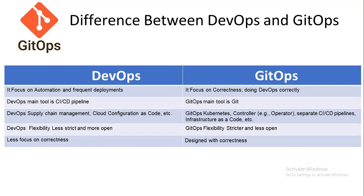In terms of flexibility, DevOps is less strict and more open, while GitOps is stricter and less open. DevOps has less focus on correctness, whereas GitOps is designed with correctness as a core principle. The most important difference is that DevOps' main tool is the CI/CD pipeline, while GitOps' main tool is Git — which is why basic Git knowledge is essential.